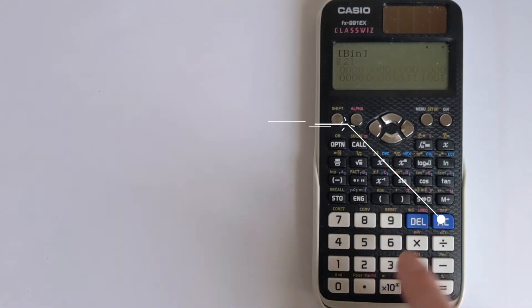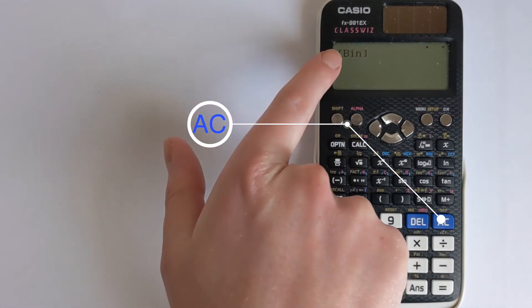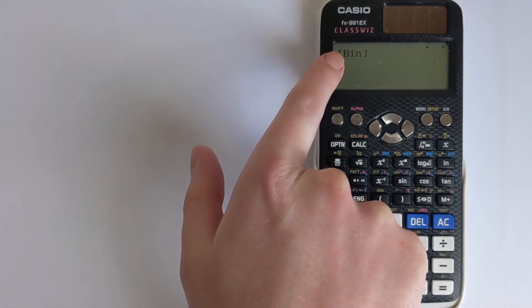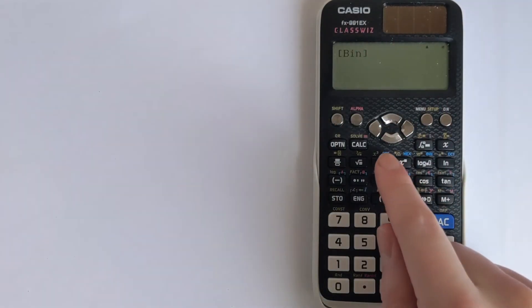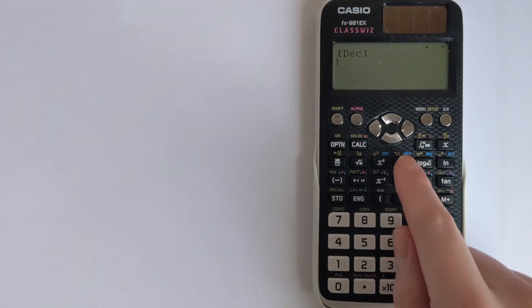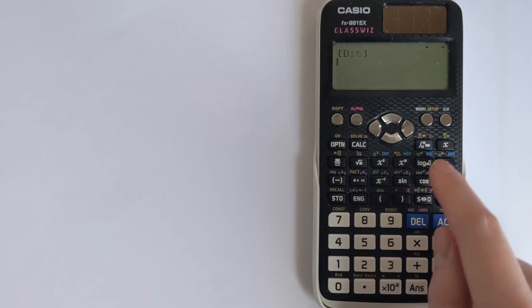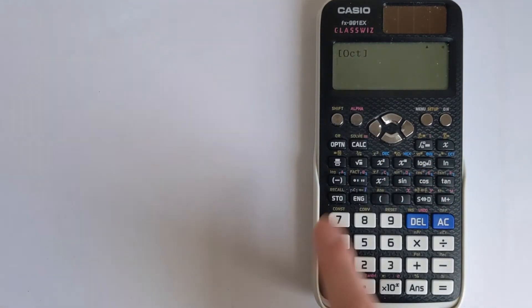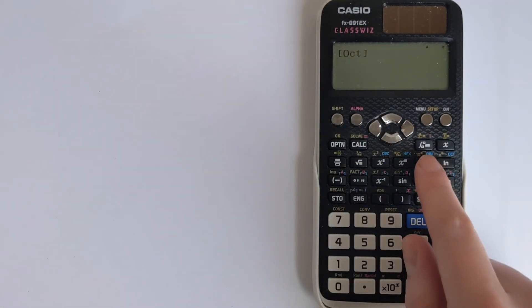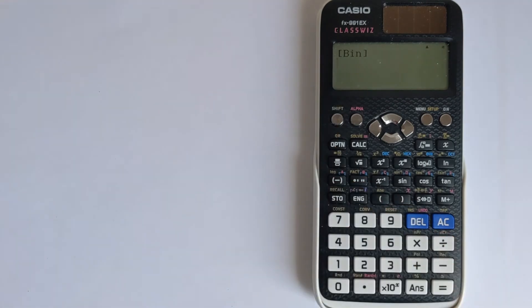Now we could press AC to clear that. It now says BIN, so it's expecting an input in binary. If you wanted to change that to a different one you could press decimal, hexadecimal, binary, or octal, and the display will change accordingly. We want binary, so make sure it says BIN for an input in binary.